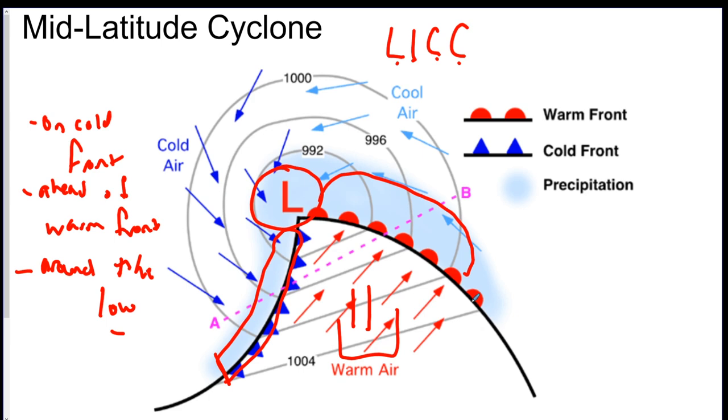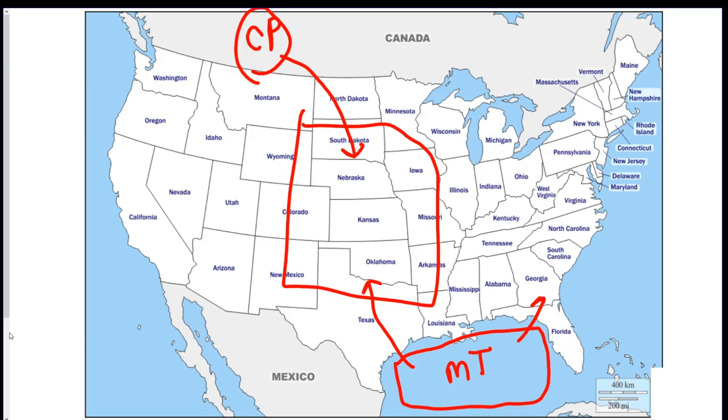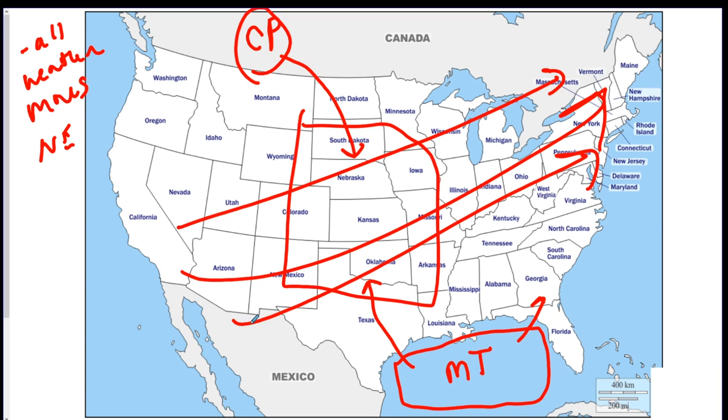This low pressure system along with all other weather, I'm going to go back to the United States map for a second. All weather moves to the northeast. So anything you see over the United States is going to go this way. Everything. Northeast. And that's because of the prevailing Westerlies wind belt. Everything goes that way.